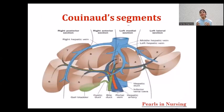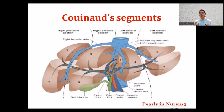The liver has eight segments — first through eighth. The clinical significance of these segments is very important: each segment has its own blood supply and its own blood drainage. This means that from a surgical point of view, if one segment is removed for any reason, the other parts of the liver will not be affected. This is especially important in liver transplantations and liver surgery.